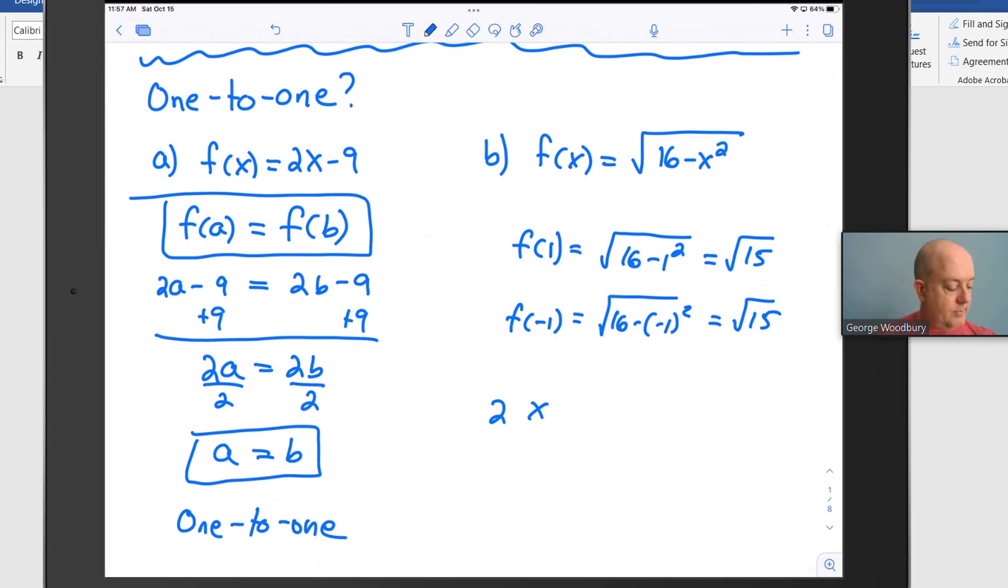That led to the same value of y. That means that this function is not one-to-one. If we had used the same approach as we did on part a, what we would have ended up with is we would have showed that a was either equal to positive or negative b. They're either the same or they're opposites. And because they could be different from each other, that would show that this function is not one-to-one.